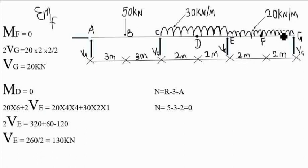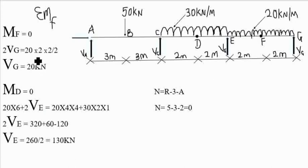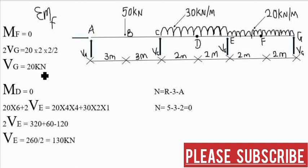Let the clockwise turning forces equal the anti-clockwise turning forces. The UDL also acts clockwise, so: 2·Vg = 20 × 2 × (2/2). The UDL always acts at the center of the span, so the moment arm from F to its centroid is 1 meter. Solving this gives Vg = 20 kilo-Newton.